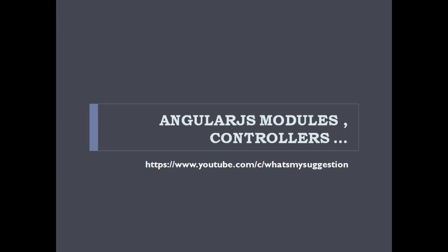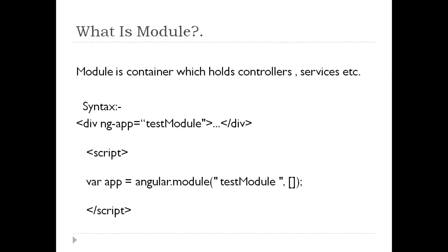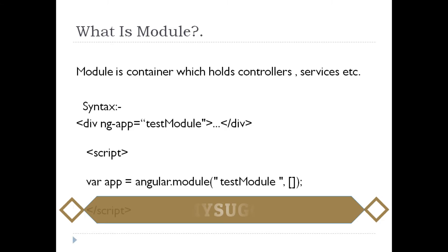What is a module, how can a module be defined, and how to make use of modules to define controllers — we are going to see now. A module is just a container, similar to our classes, where we can define all our controllers, services, factories, etc. In upcoming programs we will be seeing those particular concepts.